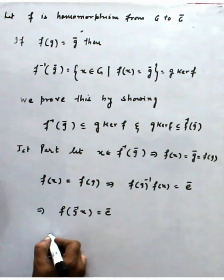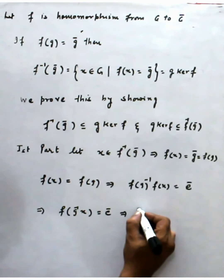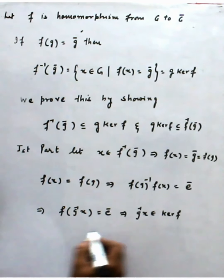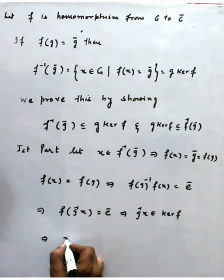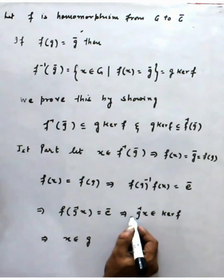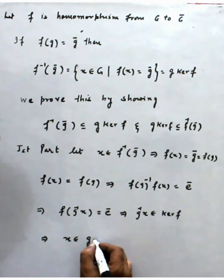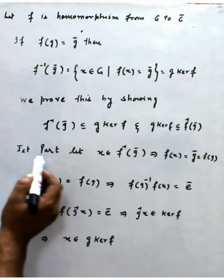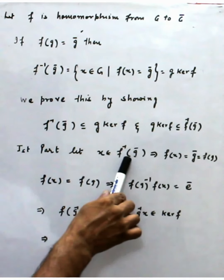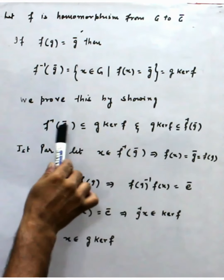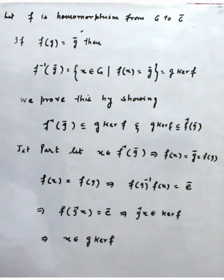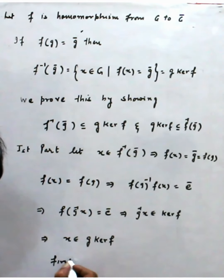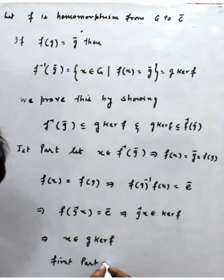This means g⁻¹x belongs to Ker(f), and multiplying g on both sides, we get x belongs to gKer(f). So starting from x belonging to f-inverse(ḡ), we have proved it is a subset of gKer(f). First part is proved.